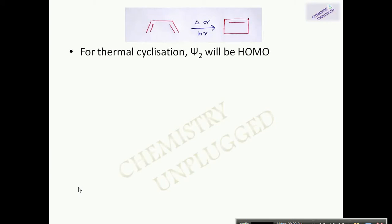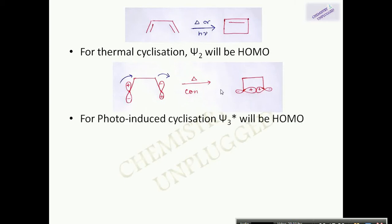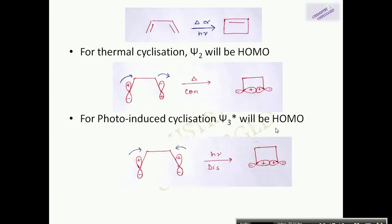For example, in 1,3-butadiene, when the reaction is thermally induced, psi 2 will be the HOMO. Psi 2 has C2 symmetry, so only conrotatory movement can lead to bond formation. For photochemically induced cyclization, psi 3 will be the HOMO — the first excited state molecular orbital. Psi 3 has mirror symmetry, so only disrotatory movement can lead to bond formation, and the movement for photochemically induced reaction will be disrotatory.